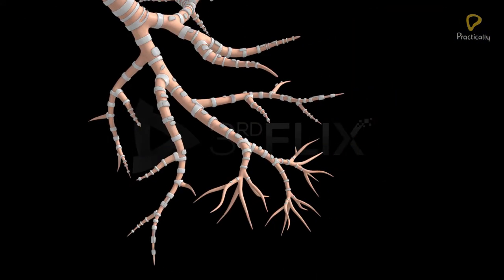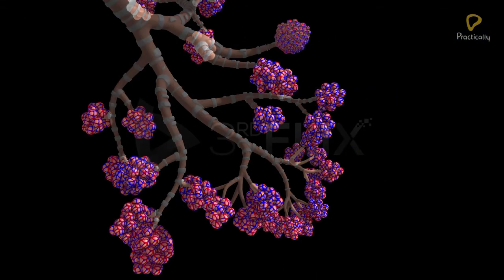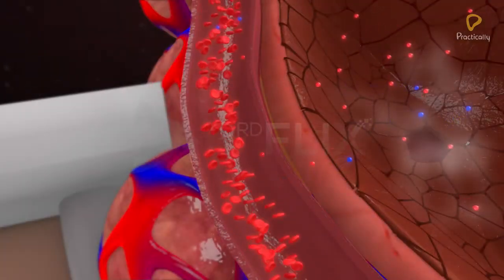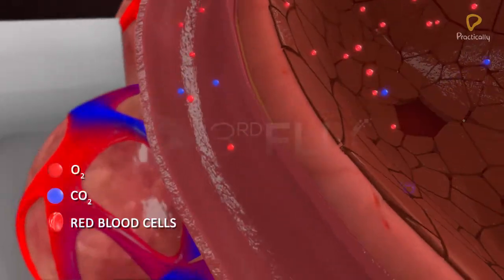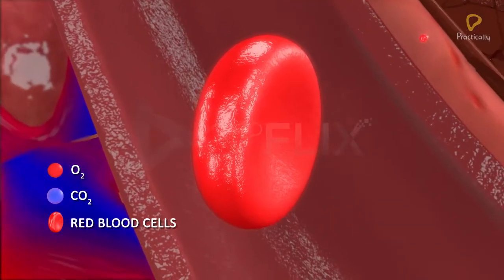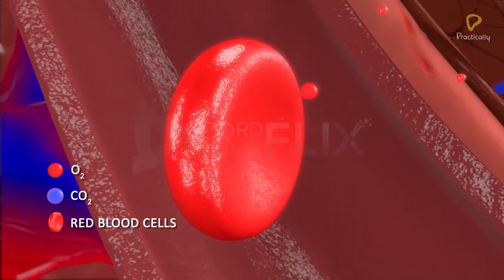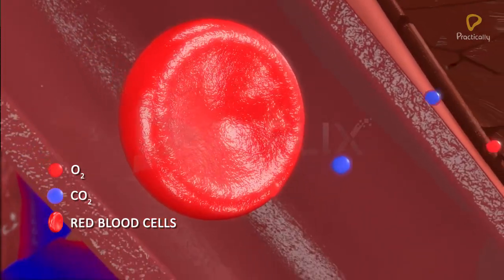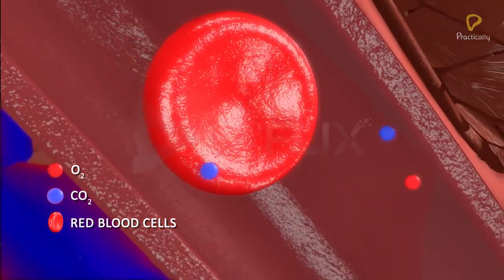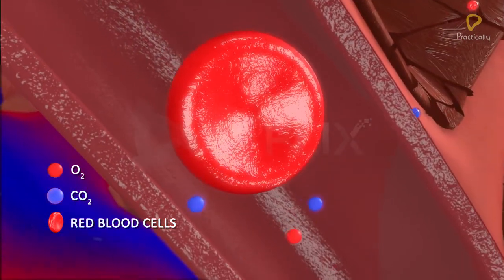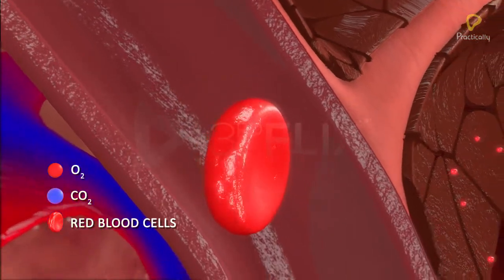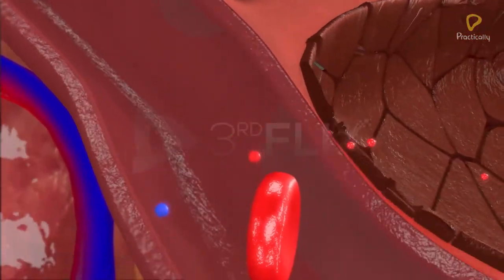The respiratory bronchioles, alveolar ducts, and alveoli form the respiratory or exchange part. It is the site of actual diffusion of oxygen and carbon dioxide between the alveolar air and blood in the pulmonary capillaries.